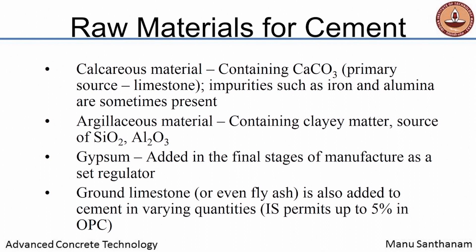Coming to the raw materials for cement production, the primary raw material is the same previously used for lime — calcium carbonate. It is essentially a calcareous material; it need not be just limestone but could be other forms of calcium carbonate with certain impurities. The source of lime may also have some impurities in the form of iron and alumina. Then you have a clay or argillaceous material, which is primarily a source of silica and alumina, because clay is basically alumino silicate. About 80% or more of the raw material for cement is actually limestone — clay is only a very minor component, which may even be present as an impurity within the limestone itself.